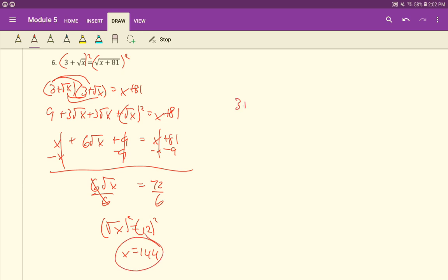Checking our work. 3 plus the square root of 144 equals square root of 144 plus 81. This is 12, we already know. So it'll be 3 plus 12 or 15. And then 144 plus 81, the square root of 225. And that'll give us then 15. Check! It works! So that is the correct answer.